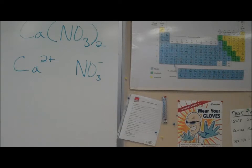Using the crossover method to determine the formula of your compound. The crossover method means that the charge of the calcium ion will tell you how many nitrate ions you need. The charge of the nitrate ion tells you how many calcium atoms you will need.